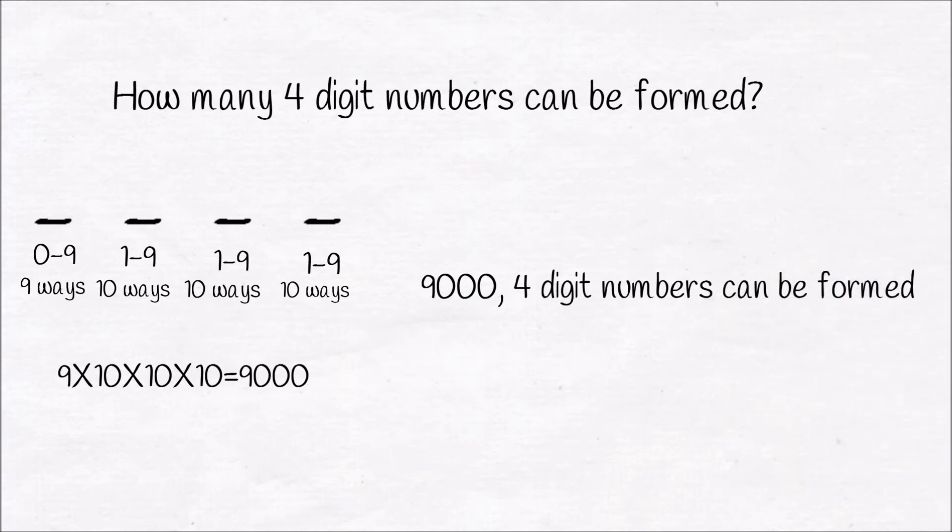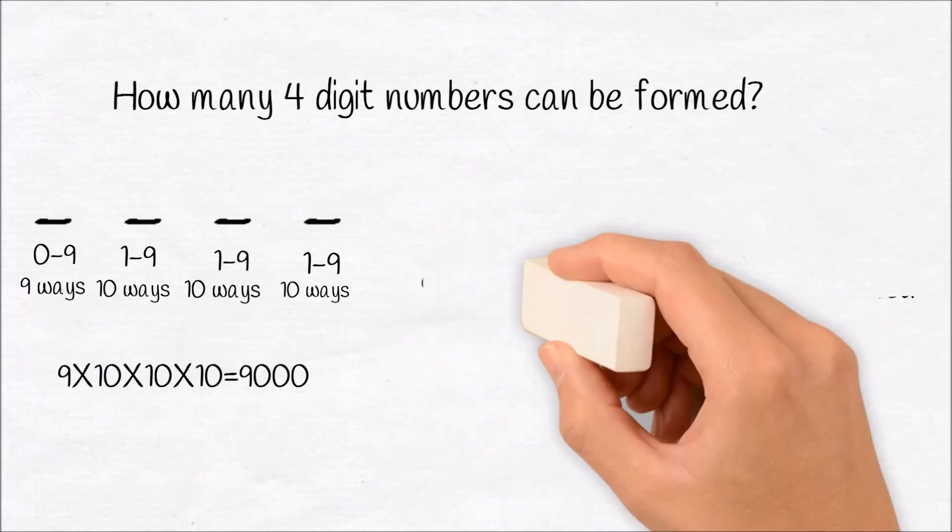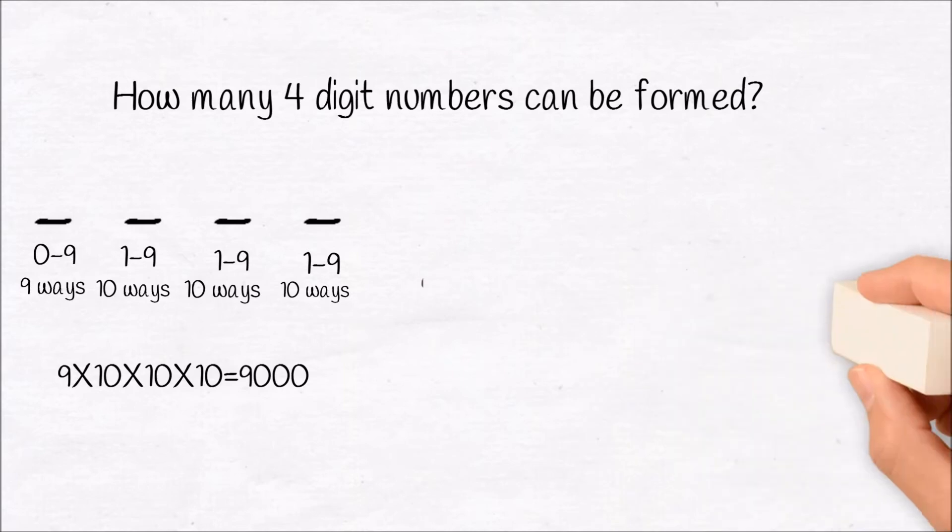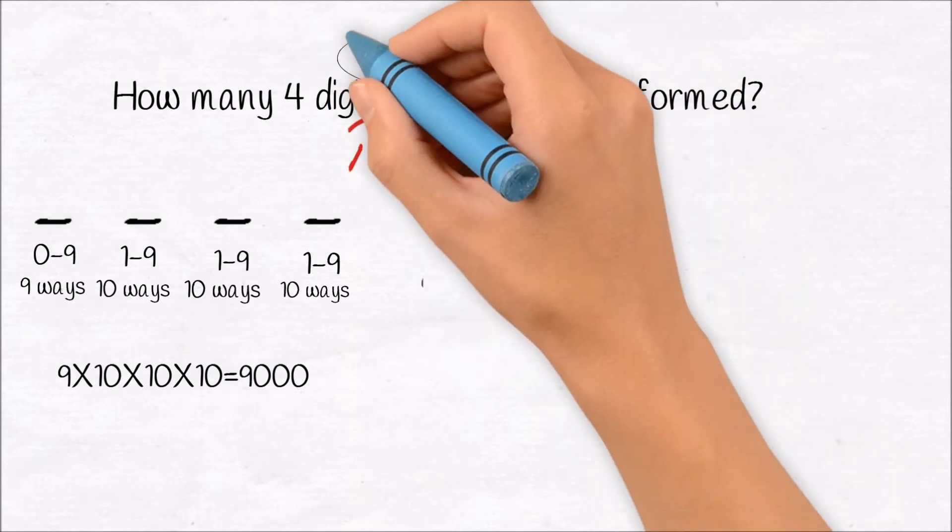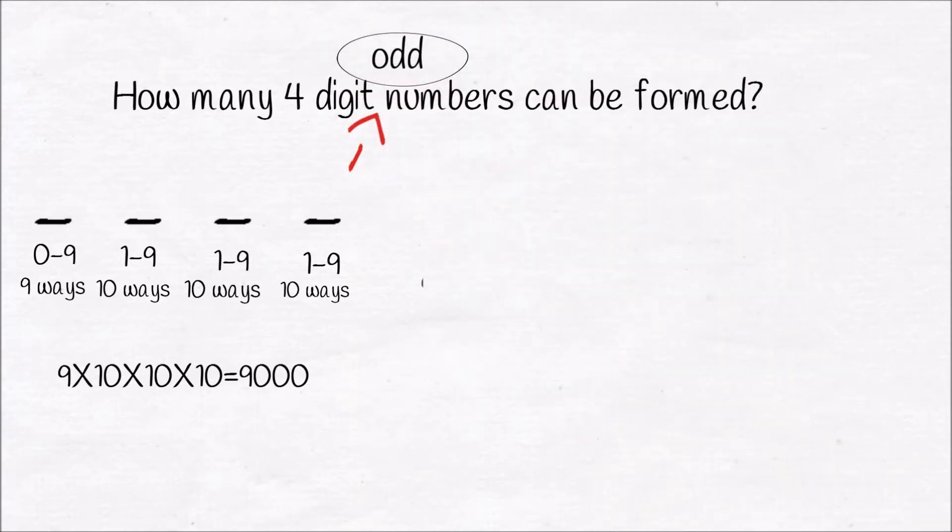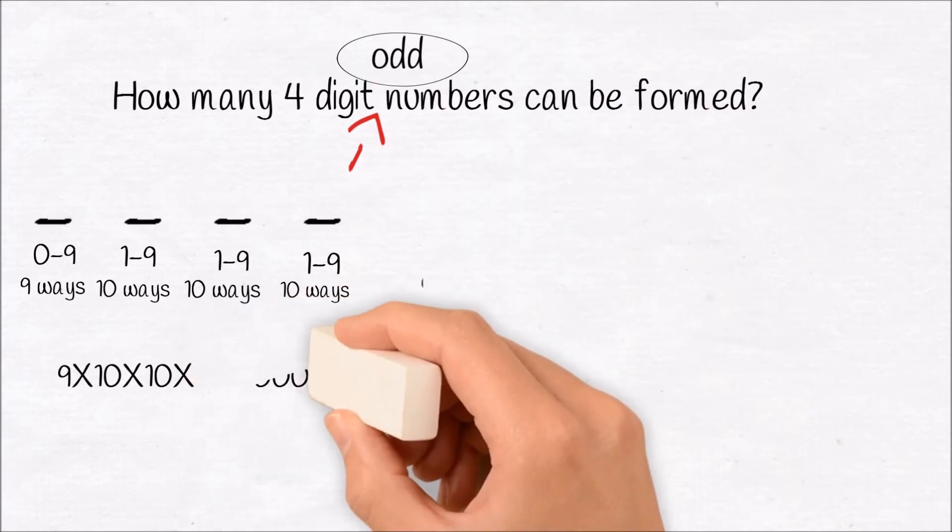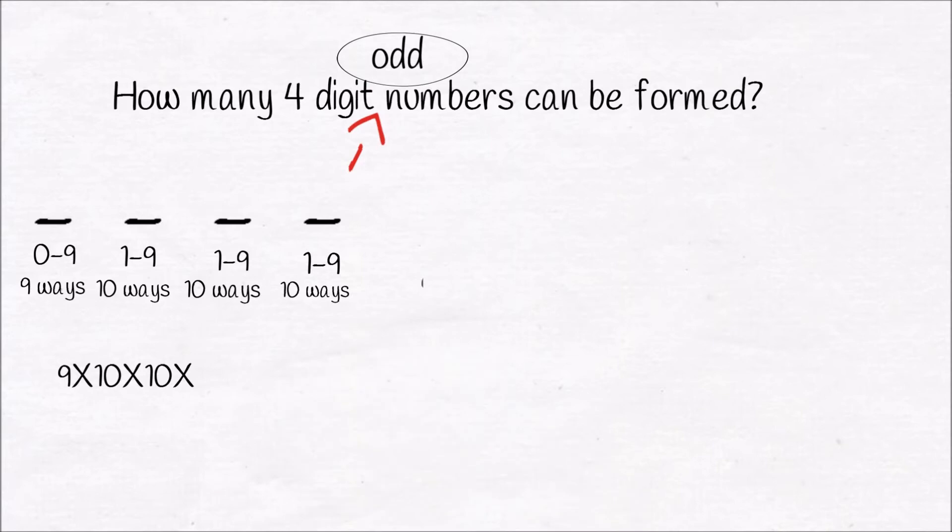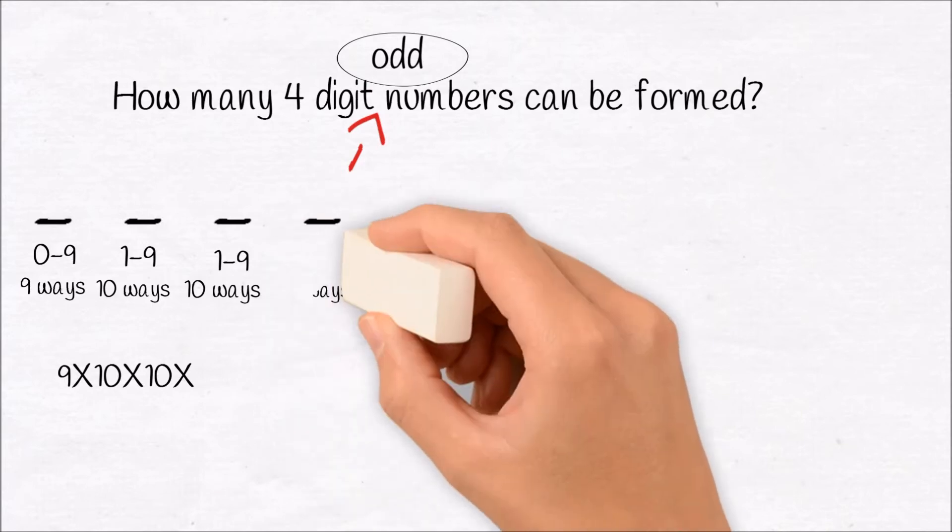You could have solved this problem without applying any formula. But let me add a small tweak in the problem. Let's say, how many 4-digit odd numbers can be formed? Whenever you solve such problems, always address the constraint in the question first. Here the constraint is the 4-digit has to be an odd number.